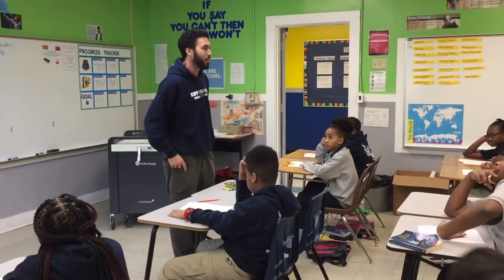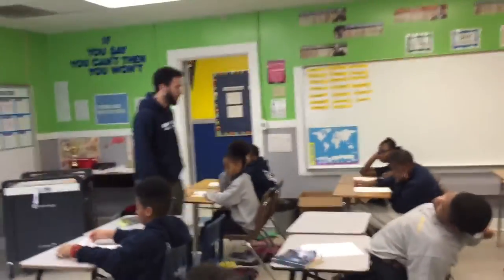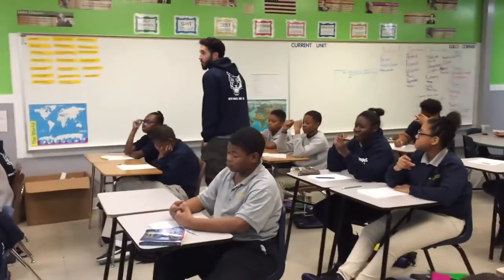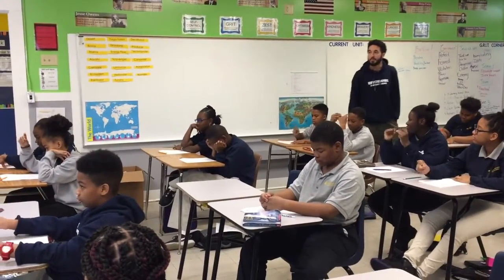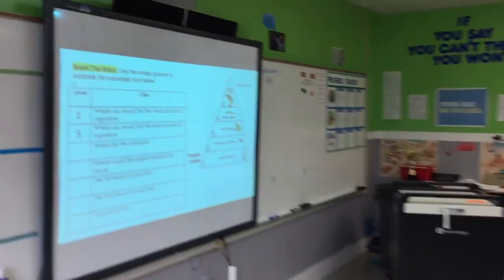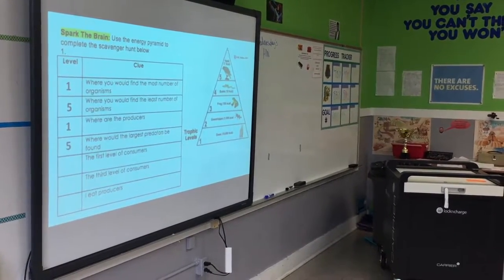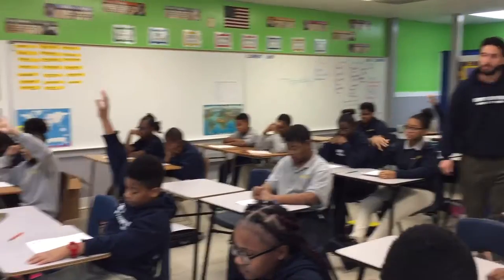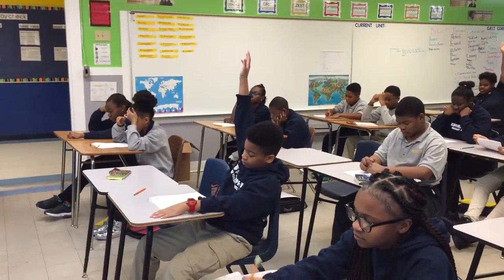Here we go. Michaela, number one — where would we find the most organisms on this pyramid? Level one. Number two, Jordan — where are we going to find the least number of organisms? Level five. Where are the producers on this, Robbie? Level one. Where would the largest predators be found, Naja? Level five. The first level of consumers, Hannah? Level two. The third level of consumers, Larry? Level four.